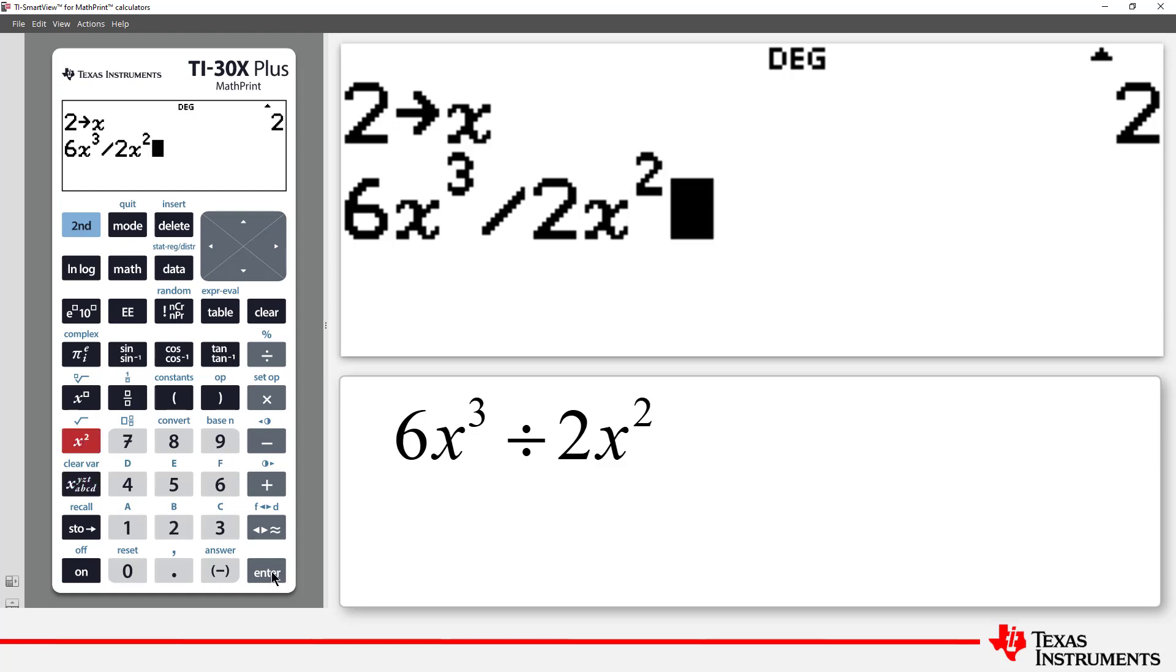So how does the calculator arrive at the answer of 96? The order of operation requires exponents to be computed first, followed by multiplication and division working from left to right. 6 times 8 is 48 divided by 2 multiplied by 4, and we arrive at our answer of 96.